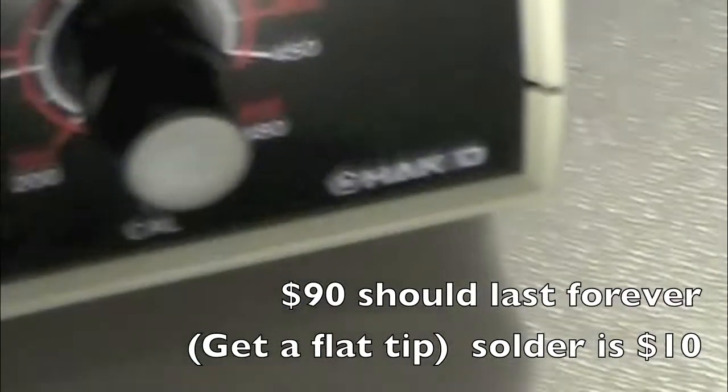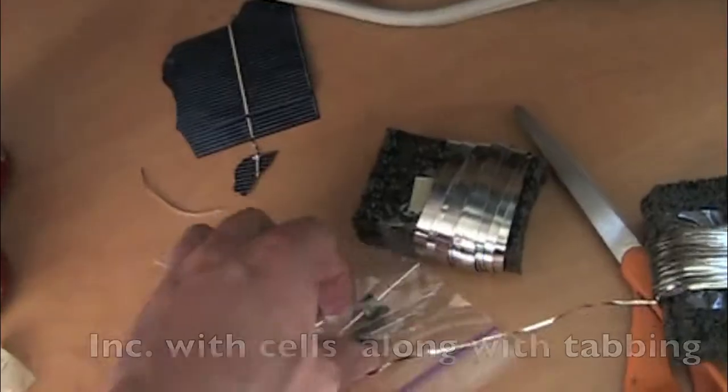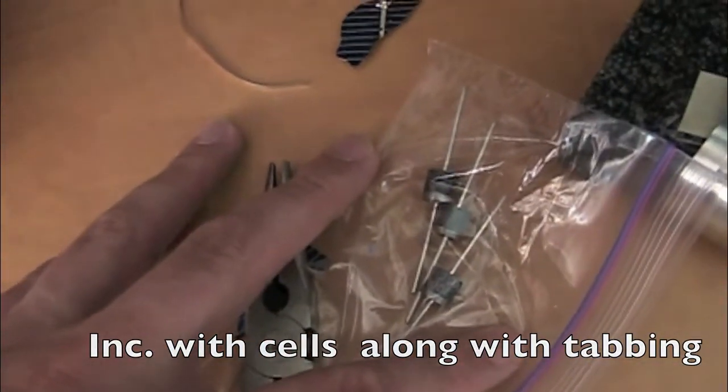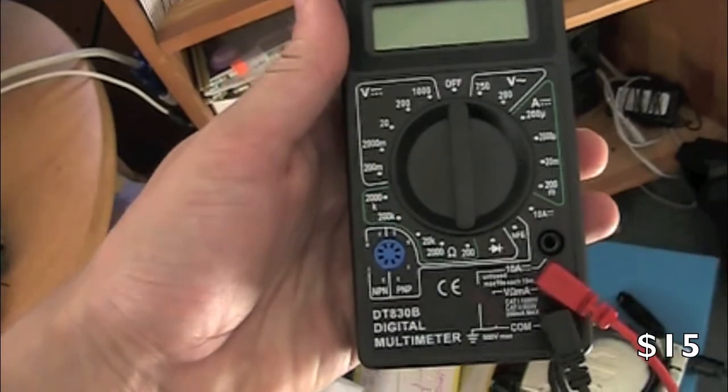It's a Hakko. These are diodes. See those? Other things I got. Digital multimeter. Make sure it can do amps.